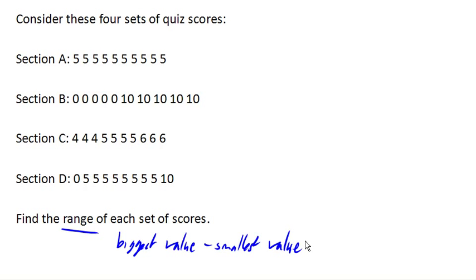So here, my largest value is five, my smallest value is five, which means this data has a range of zero. And that's really important because that tells me that the data is all the same.